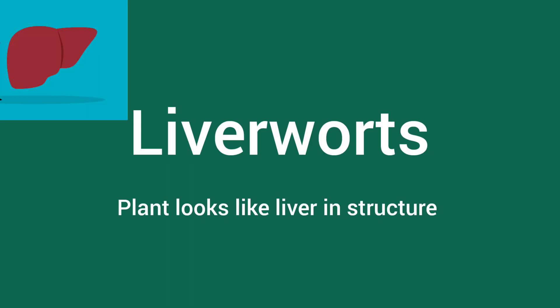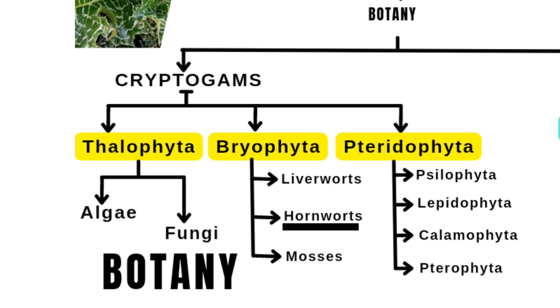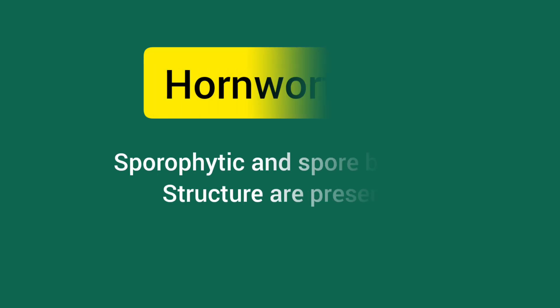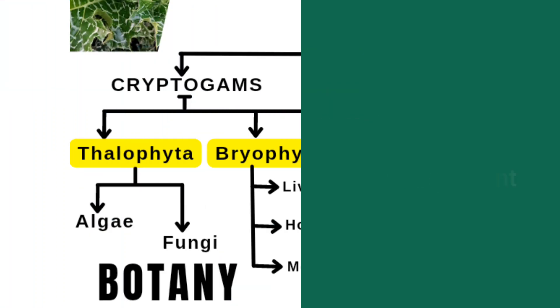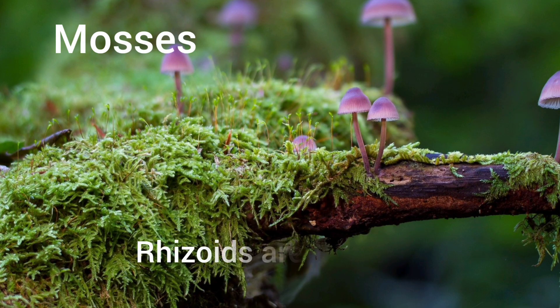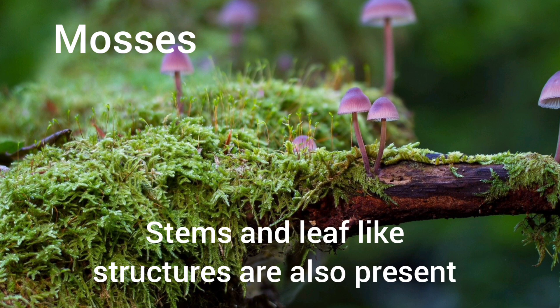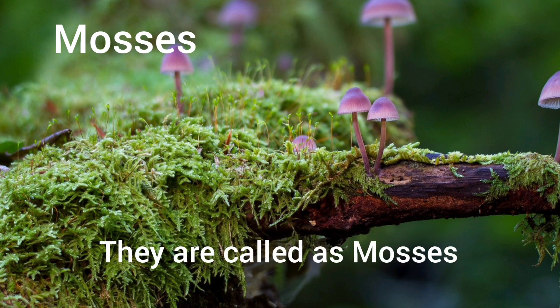First, liverworts — as the name suggests, a liver-like structure is present; the plant looks like a liver in structure. Next is hornworts — in these plants there are sporophytic or spore-bearing structures that look like horns. Third are mosses — in this group rhizoids are present, stem and leaf-like structures are also there, and spore-bearing structures called capsules are present. The distinctive character of mosses is the presence of capsules.